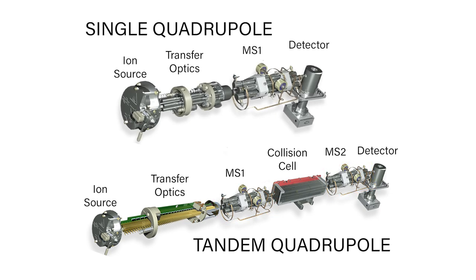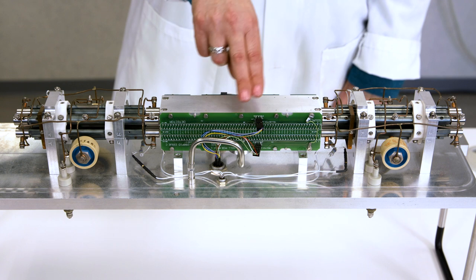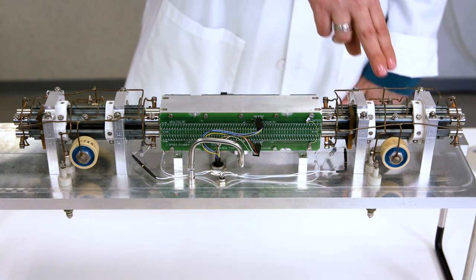During the early days of quadrupole mass spectrometry, the collision cell was a quadrupole as well, resulting in three quadrupole assemblies in the mass spectrometer. That is why many scientists may refer to tandem quadrupole mass spectrometers as triple quadrupoles.